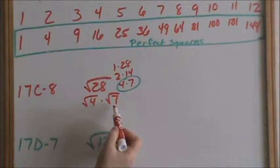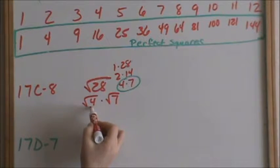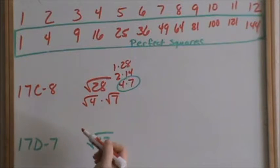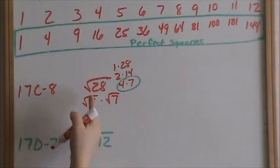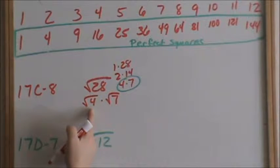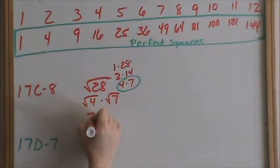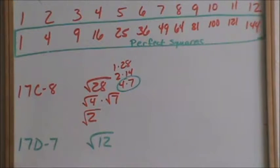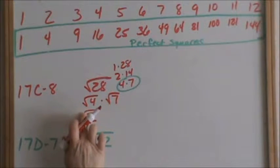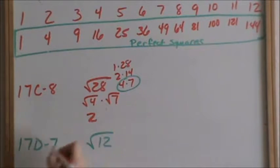Remember from rules of multiplying radicals, the square root of 4 times square root of 7 does give you the square root of 28. So we are going to break up square root of 28 into the factors of square root of 4 times square root of 7. Square root of 4 is a perfect square. I usually write my perfect squares first. Square root of 4 is 2, not square root of 2. Do not make the mistake of writing square root of 2. Square root of 4 is not square root of 2, it is just 2.